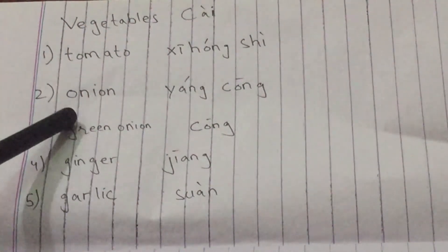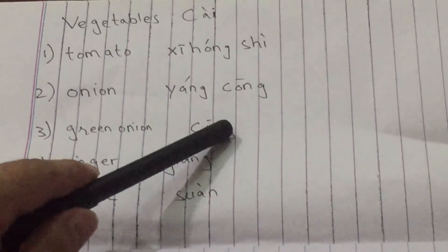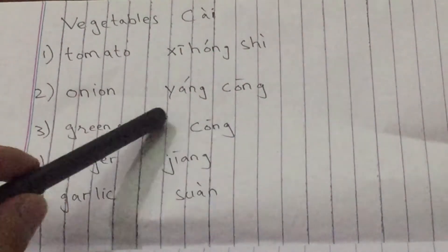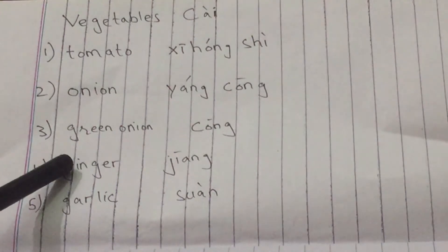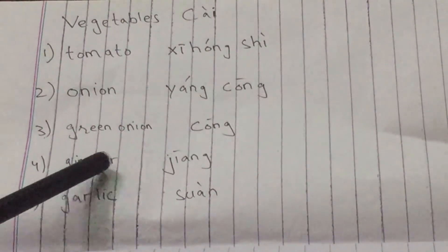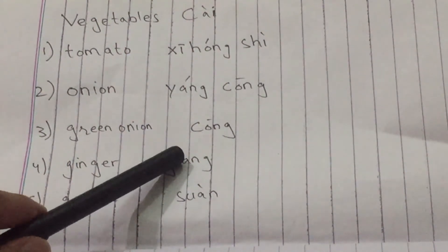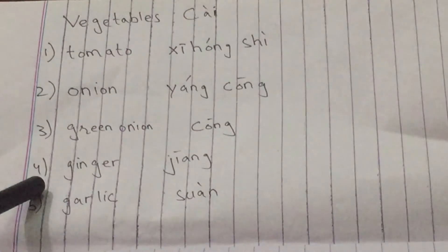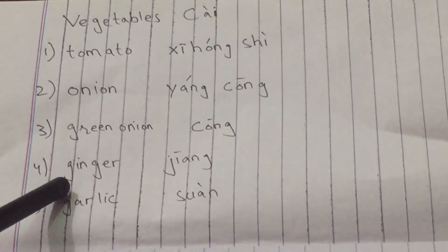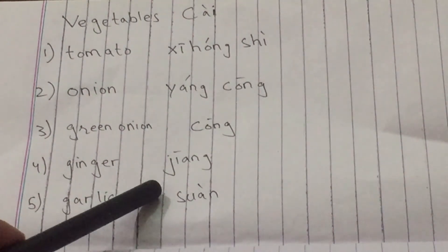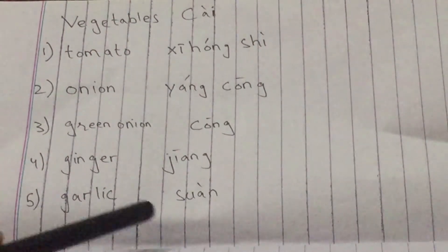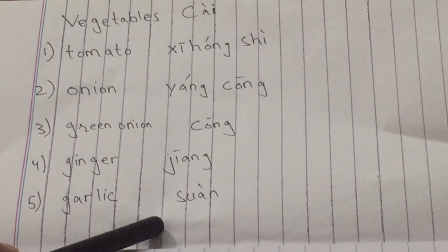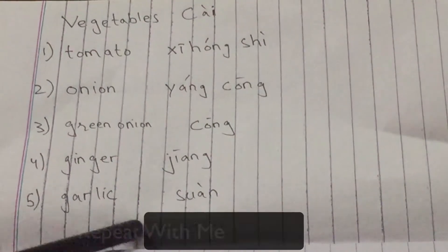Number 2, onion: Yang Cong. Yang Cong. Number 3, green onion: Cong. Number 4, ginger: Jiang. Jiang. Number 5, garlic: Suan. Suan. Now repeat with me.